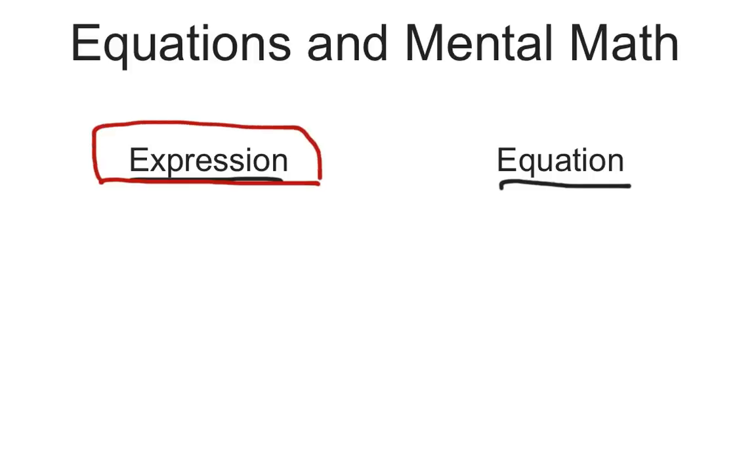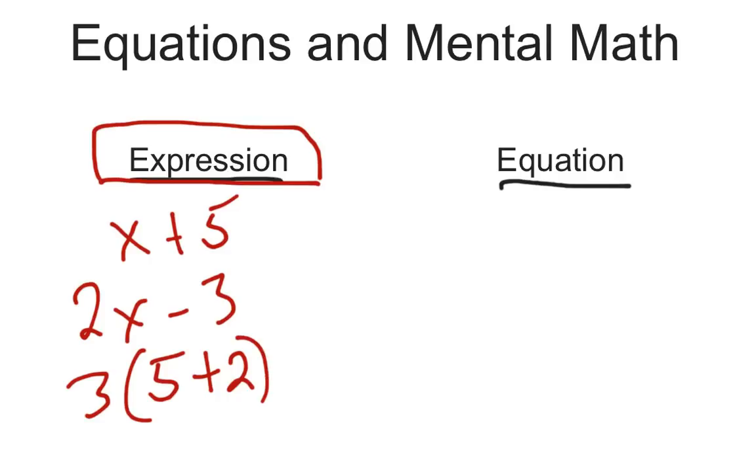And what an expression was, remember, is when there was not an equal sign. So if you were just doing something like x plus 5 would be an expression, or any type of thing, as long as it doesn't have an equal sign. We could do 2x minus 3. We could even have some type of order of operation here. Those are all expressions because there isn't an equal sign, there isn't an answer. That's what we've been doing so far.